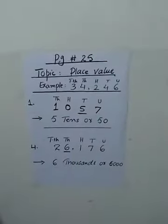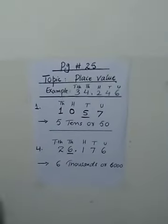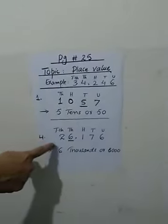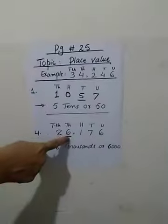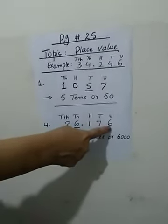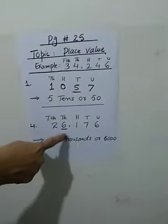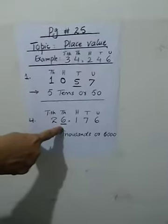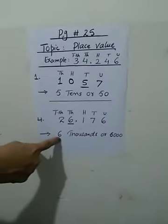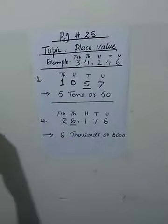Now we solve another question. Question number 4 is 2, 6, 1, 7, 6. The underlined digit is 6. The place value of 6 is 6000.